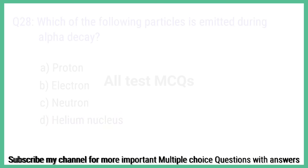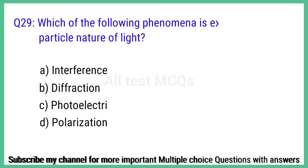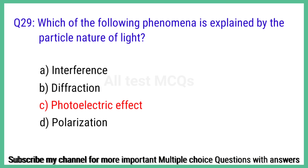Question number 29. Which of the following phenomena is explained by the particle nature of light? The correct answer is option C: Photoelectric effect.